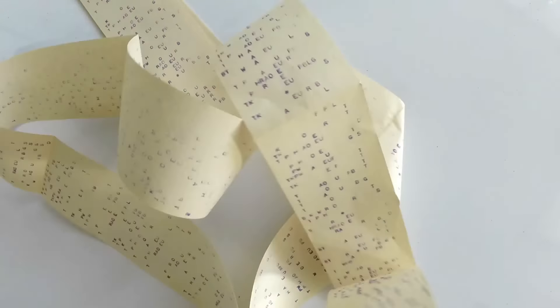Before computerized steno machines, these chords would come out on a long strip of paper with each row corresponding to a stroke or a chord. The stenographer would then have to go back and transcribe these notes back to regular text.